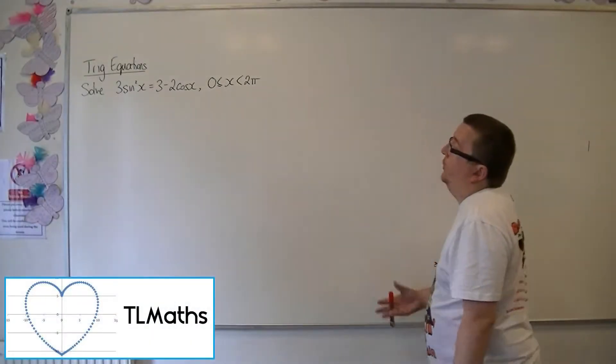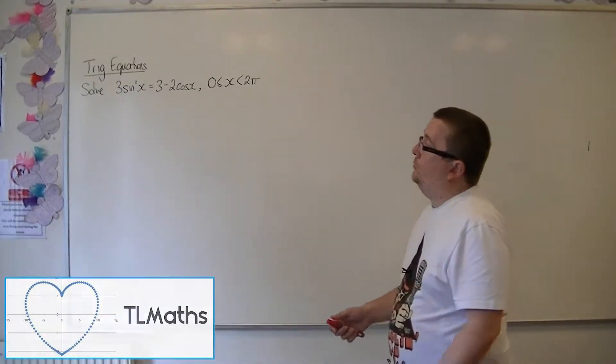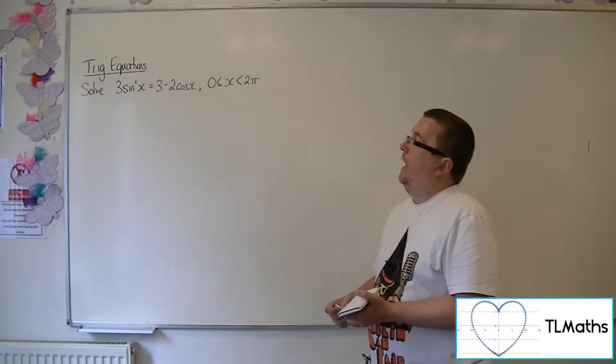Okay, so in this video I want to solve 3 sine squared x equals 3 minus 2 cosine x between 0 and 2 pi.